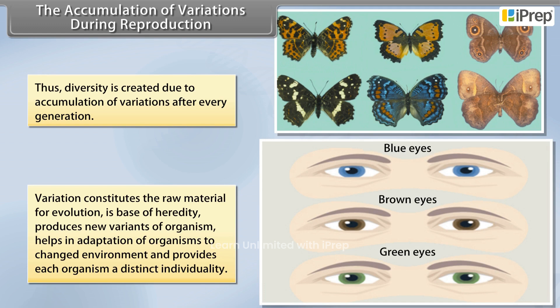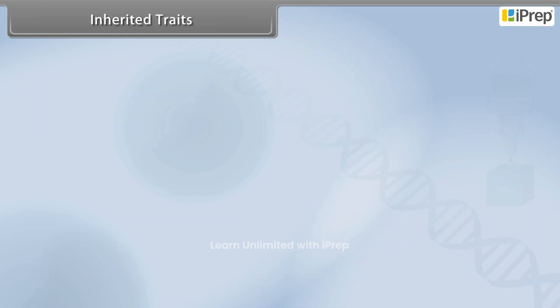Diversity is created due to accumulation of variations after every generation. Variation constitutes the raw material for evolution, is the base of heredity, produces new variants of organisms, helps in adaptation of organisms to changed environments, and provides each organism a distinct individuality.